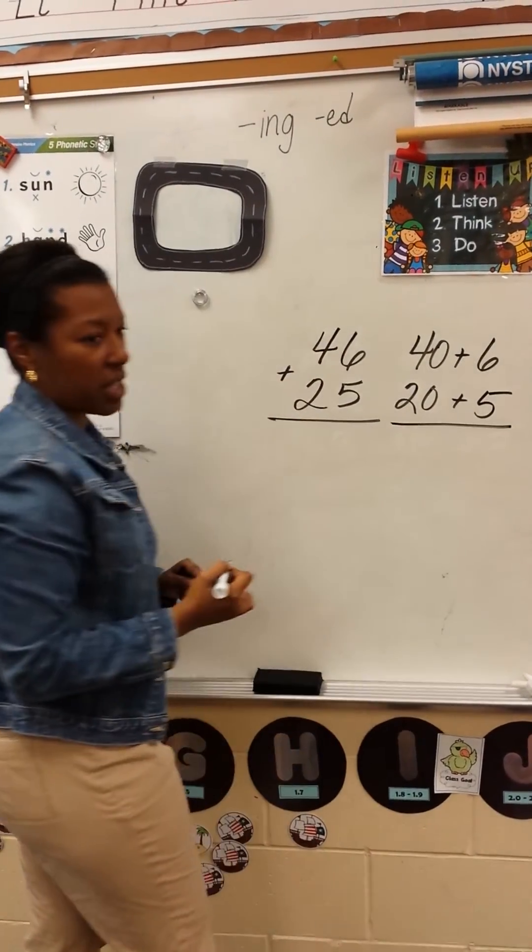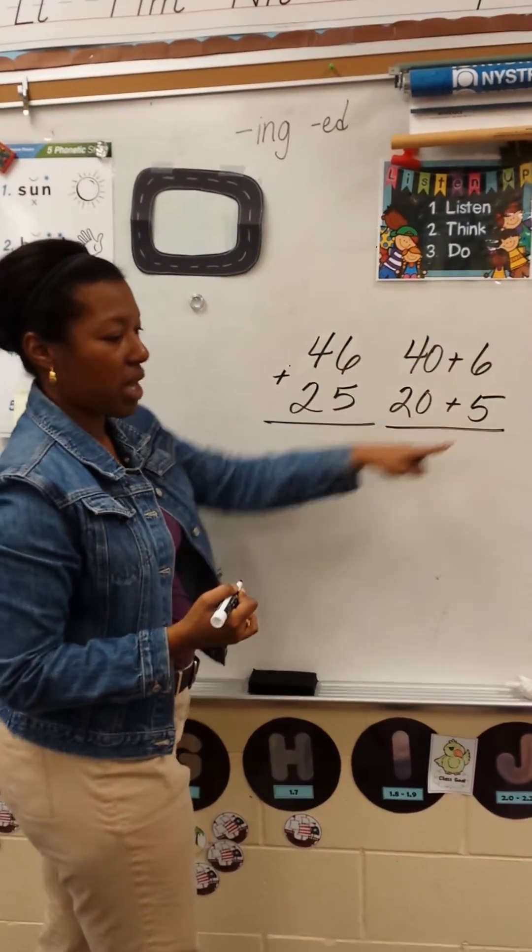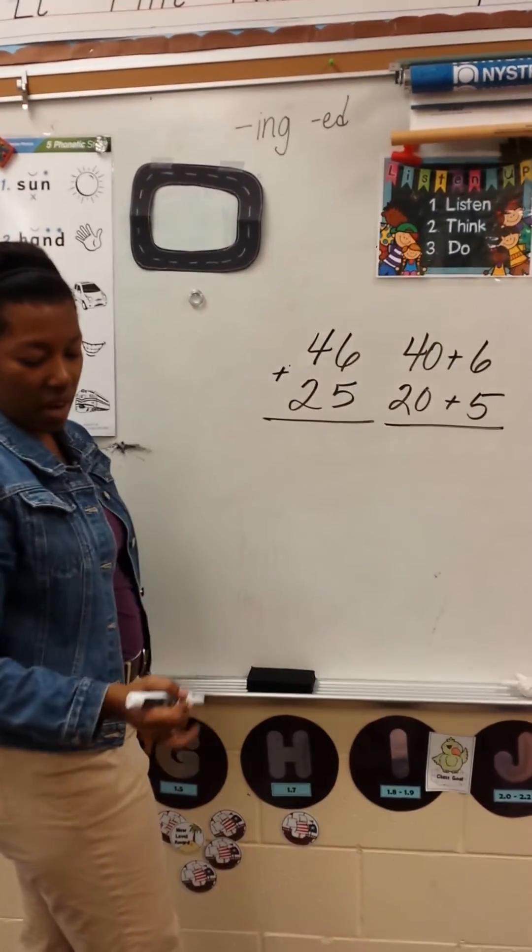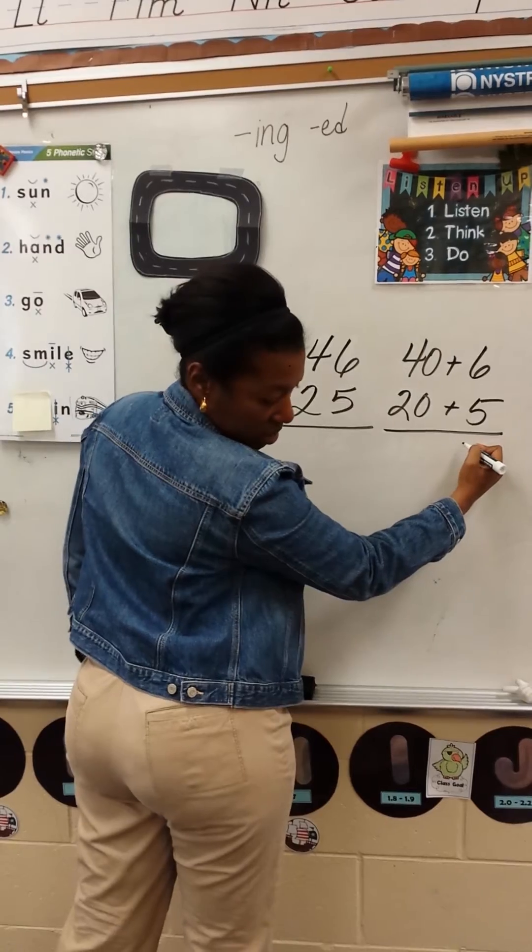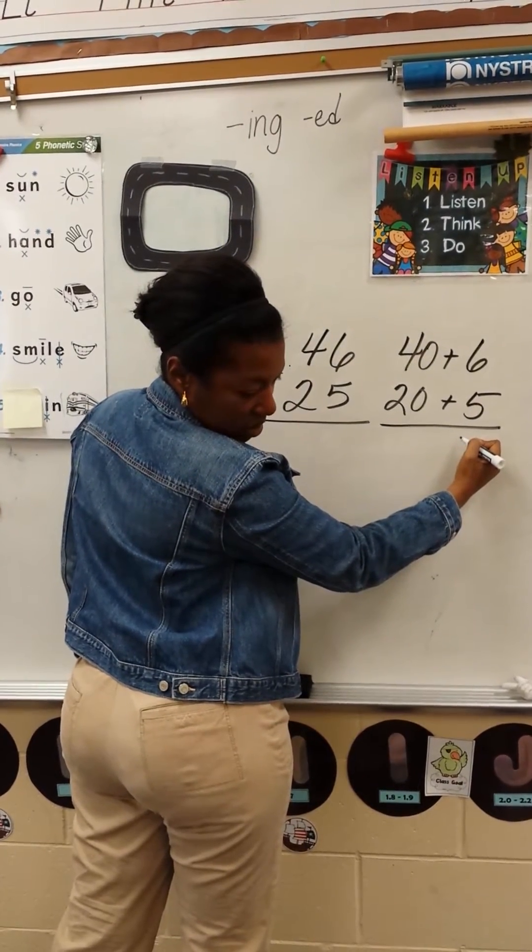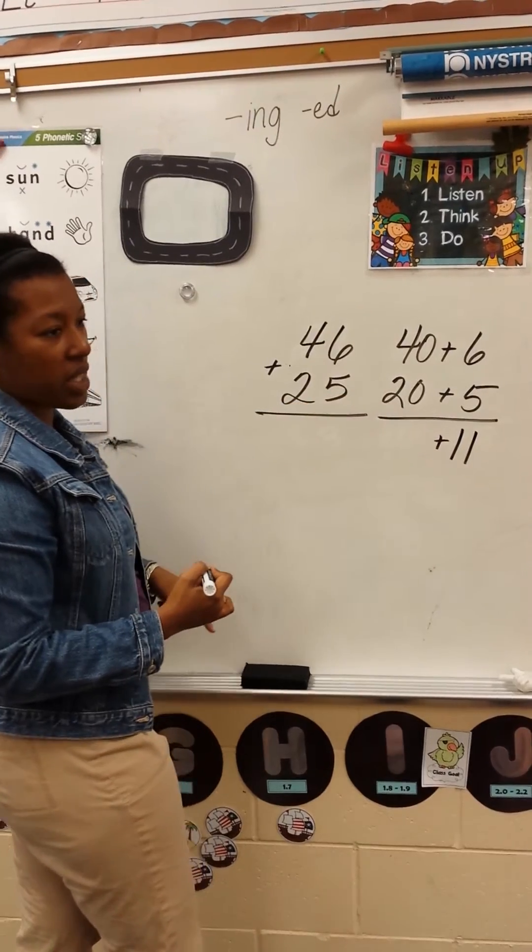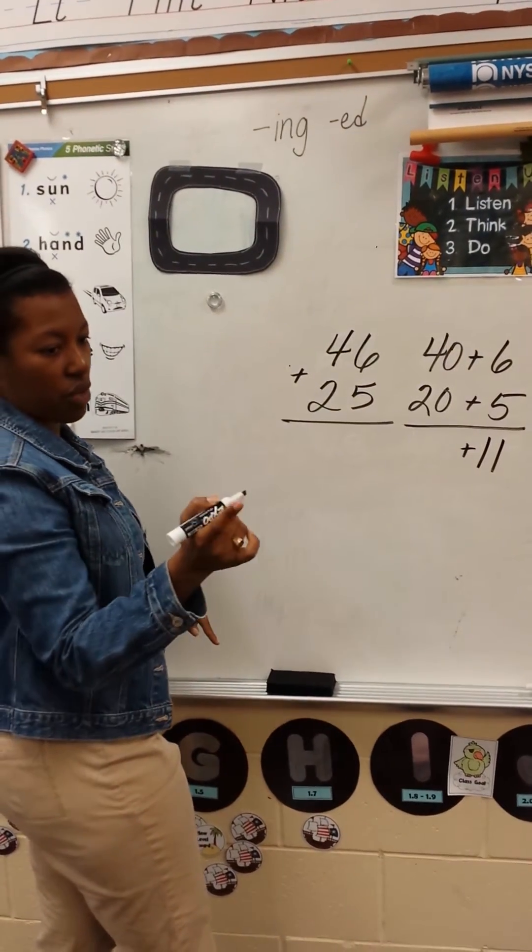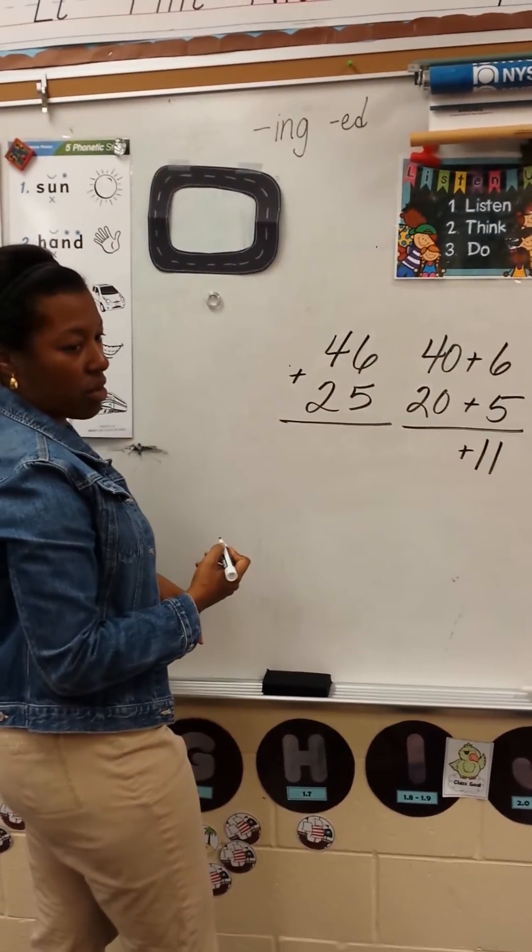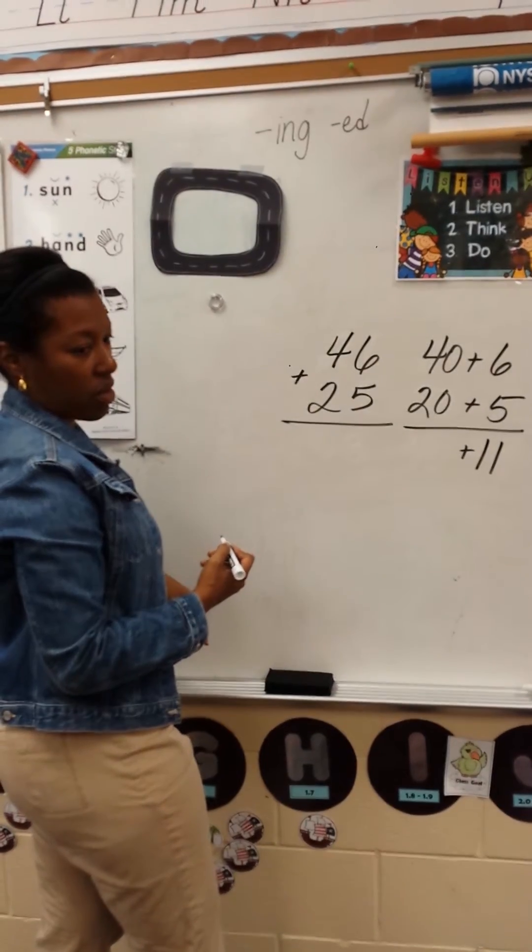I'm going to call on an individual person. What is 6 plus 5? Tiana? 11! That is correct. What is 40 plus 20? Drew? 60! 60!